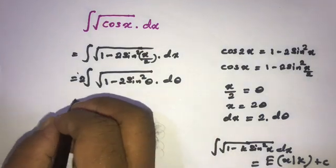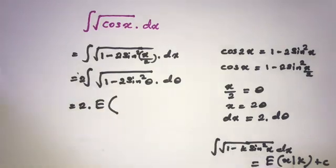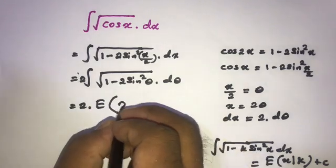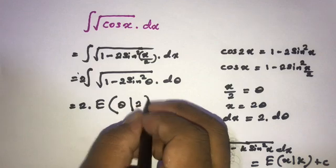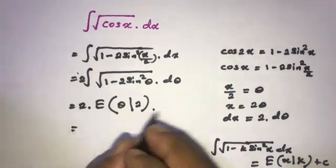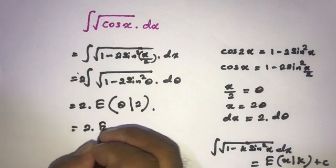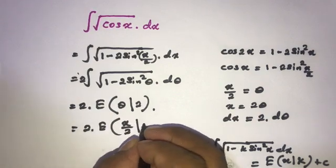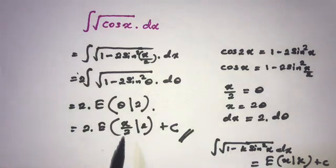Applying this formula, with theta in place of x and k equal to 2, and recalling that theta equals x over 2, the final answer is 2 times E(x/2, √2) plus C. If you like this video, please subscribe to the channel. Thank you for watching.